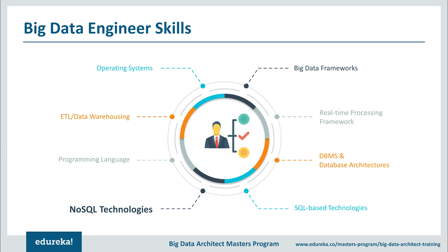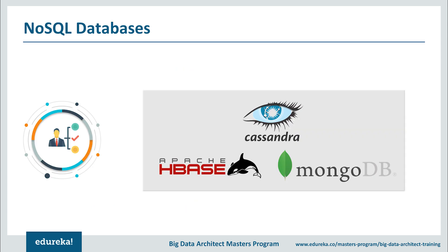Next, we have NoSQL technologies. As the requirements of organizations had grown beyond structured data, NoSQL databases were introduced. They could store large volumes of structured, semi-structured, and unstructured data with quick iteration and agile structure as per application requirements. Some of the most prominently used databases are HBase, Cassandra, and MongoDB.